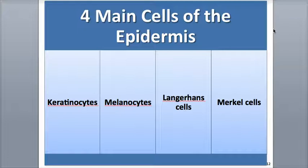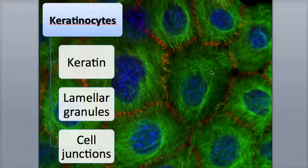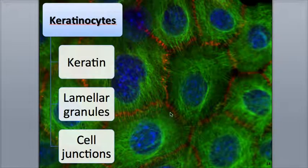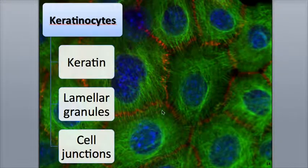The four major types of cells found in the epidermis are the keratinocytes, melanocytes, Langerhans cells, and Merkel cells. Most of the epidermal cells are keratinocytes — roughly 90% of them. Keratinocytes contain fibers of the tough protein keratin, which provides lots of physical protection to the skin. The keratinocytes also produce lamellar granules, which secrete a waxy substance that helps waterproof the skin and prevents foreign materials from entering it. The tough proteins of the keratinocytes also connect cells to each other within the epidermis, forming cellular junctions that bind the cells in all directions to neighboring cells.